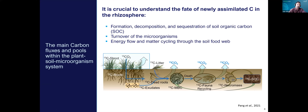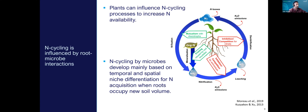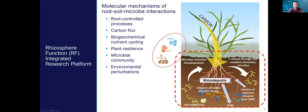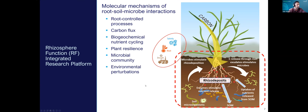As you probably know, the rhizosphere is one of the most complex systems in the world, comprised of an integrated network of plant roots, soil, and diverse microbial consortium. The rhizosphere function integrated research platform investigates the molecular mechanisms of root-soil-microbial interactions and the effects of root control processes, including rhizodeposition and below-ground carbon flux, biogeochemical nutrient cycling, plant resilience, and microbial community structure and function. A specific focus is to study rhizosphere processes in response to environmental perturbations like drought, heat, and salinity.